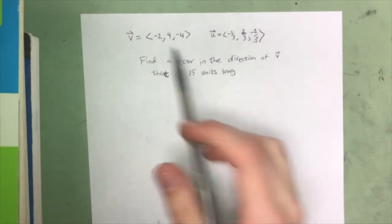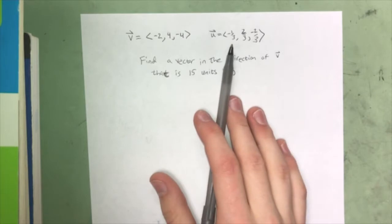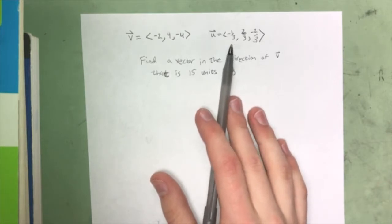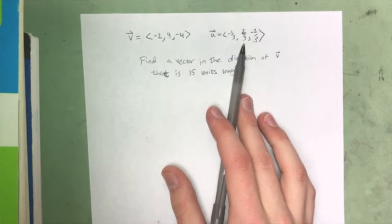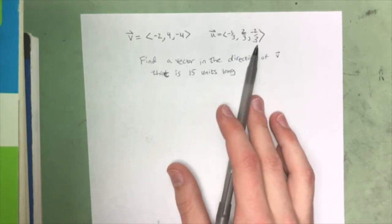Alright, so in the last video we took a vector v and we were able to find the unit vector of v, which is negative 1 over 3, 2 over 3, and negative 2 over 3.